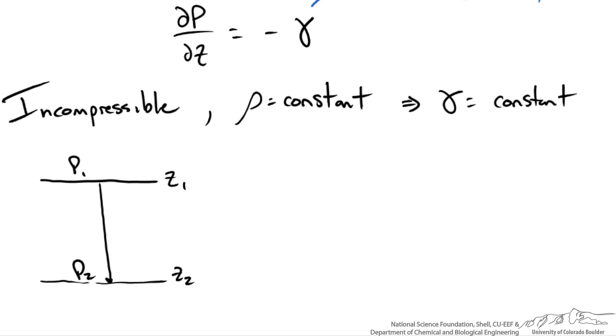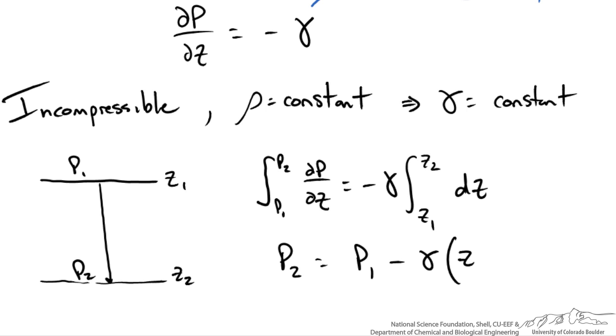We would evaluate our integral from p2 to p1, and set this equal to negative gamma evaluated from z2 to z1 dz. This gives us the relationship p2 is equal to p1, minus gamma, z2, minus z1.